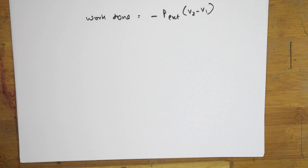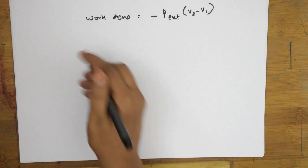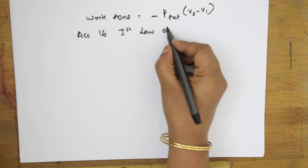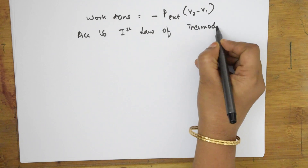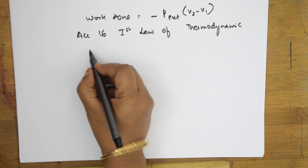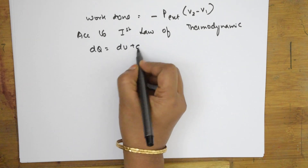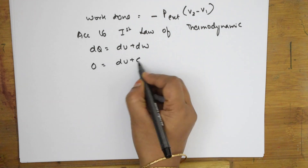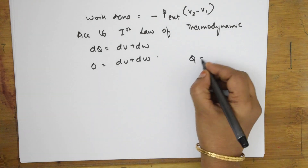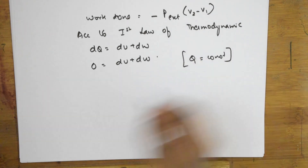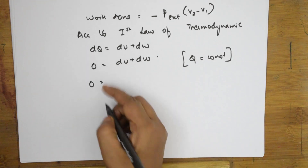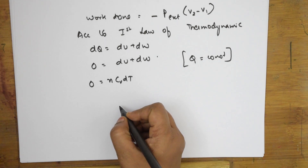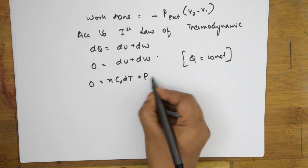Now, since this is an adiabatic process, we go back to the first law of thermodynamics: dQ = dU + dW. Because it's an adiabatic process, dQ becomes zero. So zero equals dU plus dW. For an adiabatic process, Q is zero, so this can be written as n·Cv·dT plus p·dV equals zero.